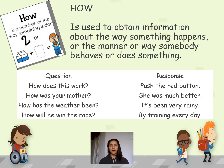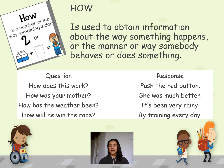Let's continue with 'how.' How is used to obtain information about the way something happens, or the manner somebody behaves or does something. Lo utilizamos para obtener información acerca de cómo sucede algo o la manera como alguien se comporta o hace algo. Examples: How does this work? Push the red button. How was your mother? She was much better. How has the weather been? It has been very rainy. How will he win the race? By training every day.